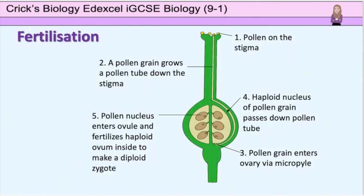When a pollen grain lands on a stigma of the same species, a pollen tube may start to grow very rapidly – maize pollen tubes can grow at a rate of about one centimetre an hour. The pollen tube is attracted towards the ovary due to the release of a chemical signal. This long tube grows through the style and reaches the ovary, entering through a small opening called the micropyle. The nucleus of the pollen grain then passes down the tube to fuse with the nucleus of an ovum in fertilisation to form the diploid zygote.